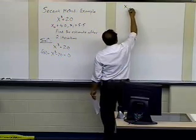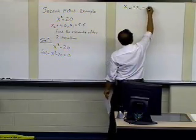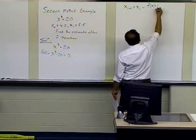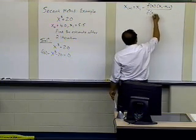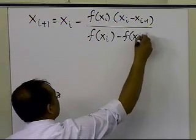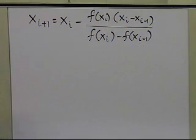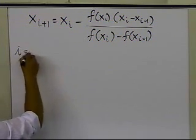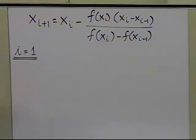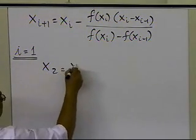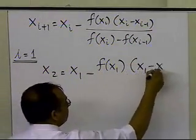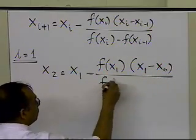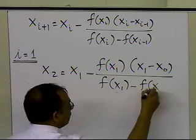So we need to find the root of x cubed minus 20 equals 0, with initial guesses 4 and 5.5. The general formula for the secant method is: x(i+1) = x(i) minus the value of f(x(i)) times [x(i) minus x(i-1)], divided by [f(x(i)) minus f(x(i-1))]. We want to use this formula over two iterations. Setting i equal to 1, we get: x2 = x1 minus f(x1) times (x1 minus x0), divided by [f(x1) minus f(x0)].